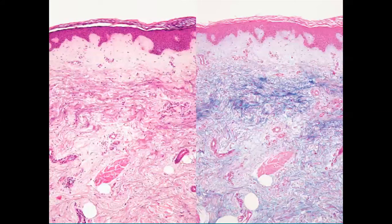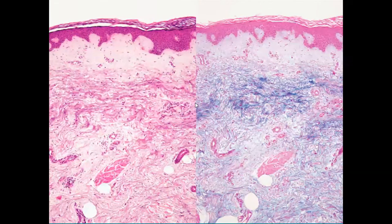In the image shown, two stains are compared. On the left is H&E stain, showing violaceous or dark pink fibers in the mid-dermis. On the right, Alcian blue stain colors these fibers blue, confirming mucinosis. While there are many causes of mucinosis, here we are seeing generalized lichen myxedematosus.